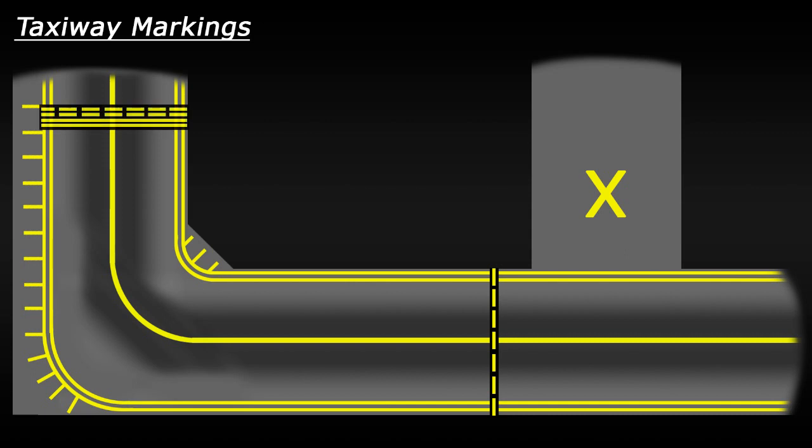Next up you have runway hold markings. These indicate a location where an aircraft should hold before entering a runway. These consist of four yellow lines. You have two solid lines and two dashed lines, like so. The solid lines indicate the side where the aircraft should hold. For example, if an aircraft is travelling in this direction, it would need to hold and wait for clearance from air traffic control before passing this hold point. However, an aircraft travelling in the opposite direction, which is going to pass over the dashed lines first, is allowed to proceed without ATC clearance.